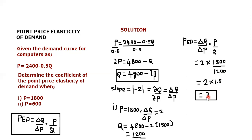When the price elasticity of demand is 3, it means demand is elastic. So I'd like you to try the second part of the question on your own: find the price elasticity of demand when the price is 600. Comment below with your answer and we'll engage. Thank you — that was today's lesson, until next time.